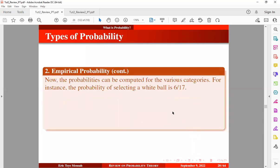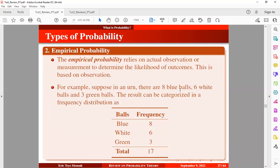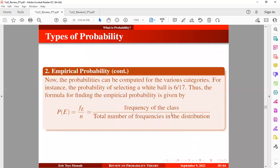The probability can be computed for the various categories. For instance, the probability of selecting a white ball is six out of 17. Here we have six white balls divided by the total number of balls, which is 17. Generally, the formula for finding empirical probability is given as shown below. The probability of the event is the frequency of that event divided by the total number of frequencies in the distribution.